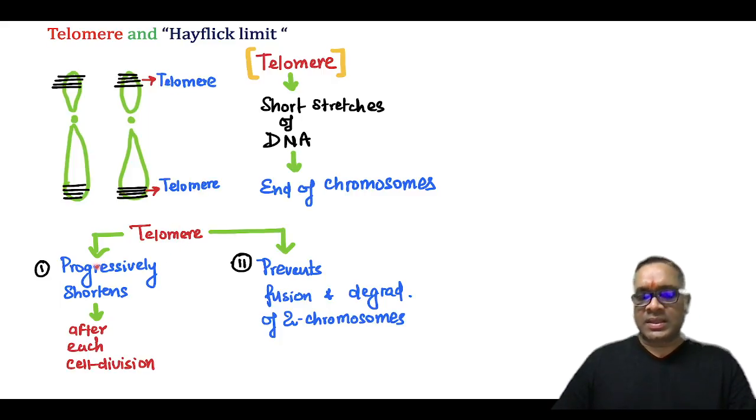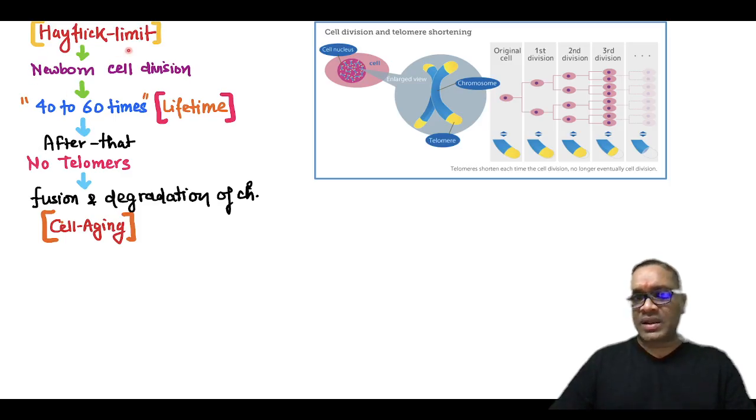What is their purpose? They progressively get shorter after each and every cell division and they prevent fusion and degradation of the two chromosomes, as you can see here. But what happens in Hayflick limit?